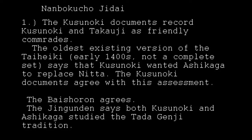There are many stories in the Kusunoki documents about these two working together — sitting around campfires, swapping stories, and so on. Even the oldest existing version of the Taiheiki, from the early 1400s (around the 1420s), specifically says that Kusunoki wanted Ashikaga to replace Nita Yoshisada. Kusunoki went to the imperial court and suggested Nita Yoshisada be removed from command and Ashikaga Takauji placed in command. The Kusunoki documents agree with this version, a text called the Baishuron also agrees, and the Jengundin itself says that Kusunoki and Ashikaga both studied Tadaginji traditions.